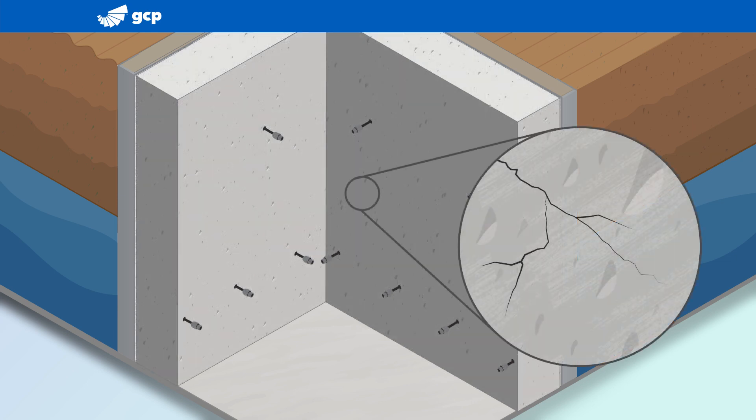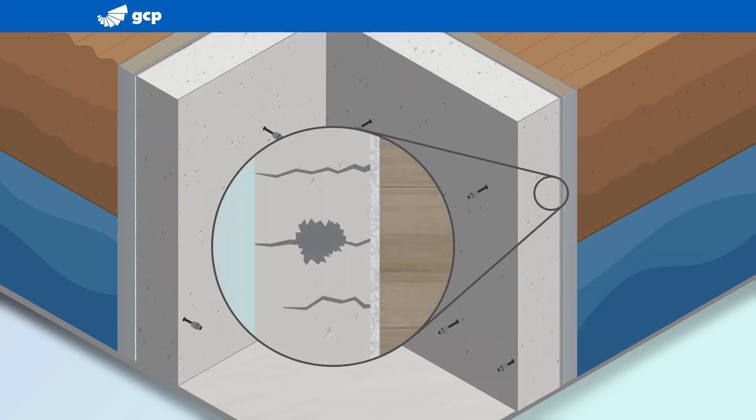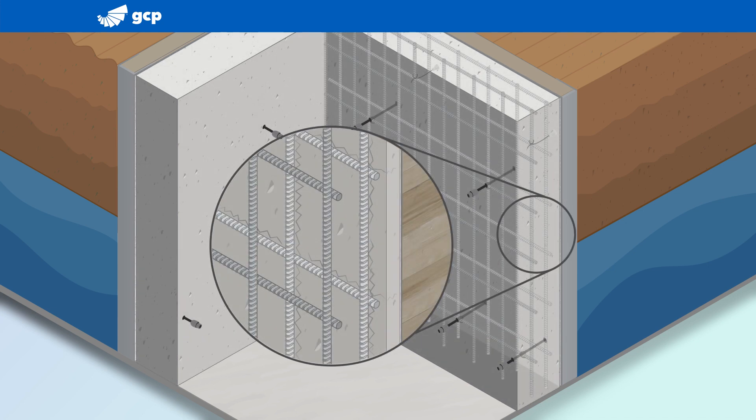As the Shotcrete cures, cracks, voids, and channels for water migration inevitably form.